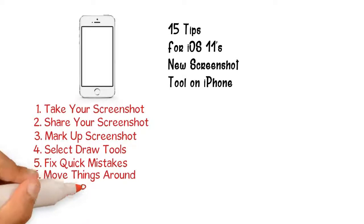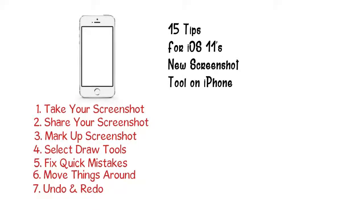You can use the back arrow in the top right to undo your last edit or to keep going back as far as you need to. Conversely, the forward arrow will redo any action or actions. You can also press and hold on the buttons to bring up more undo or redo options. This is very similar to the markup tool in photos, with the addition of the redo button.